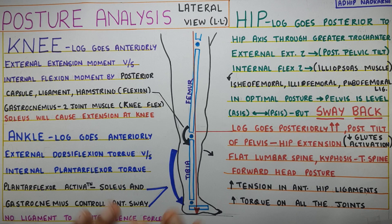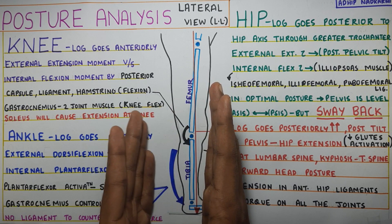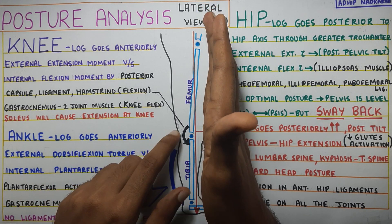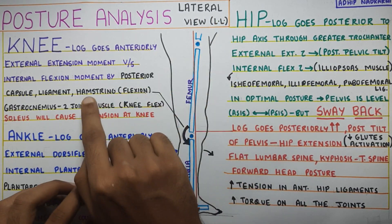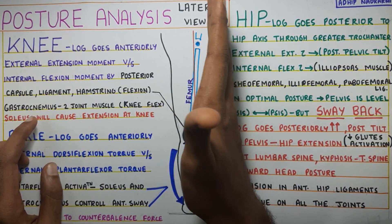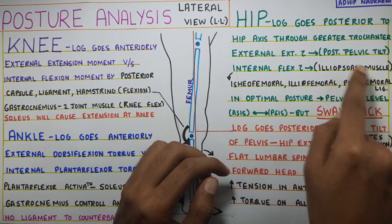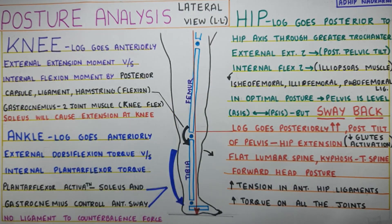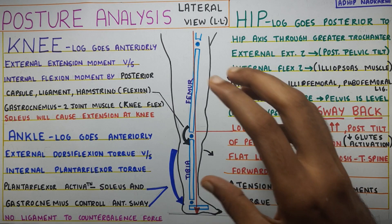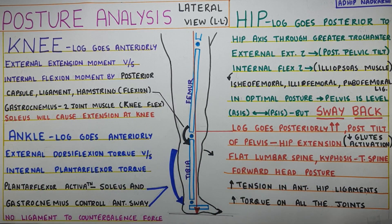To summarize: at the ankle, the line of gravity goes anteriorly, countered by plantar flexor torque from soleus and gastrocnemius. At the knee, it again goes anteriorly, creating external extension torque, countered by flexion from hamstrings, ligaments, and capsule. At the hip, it goes posteriorly, creating extension torque, countered by iliopsoas and the anterior hip ligaments. We also saw how sway back posture creates problems at each level and puts excessive load on joints. In the next video we'll build further on this foundation for analyzing gait kinematics and kinetics.